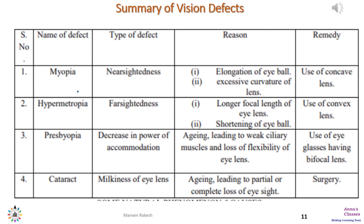This slide sums up all the vision defects: myopia, hypermetropia, presbyopia, and cataract, which can be corrected using spherical lenses. The type of lens for myopia is a concave lens, for hypermetropia it is a convex lens, for presbyopia it is essentially a bifocal lens, and cataract requires replacement of the natural lens with an artificial lens through surgery.